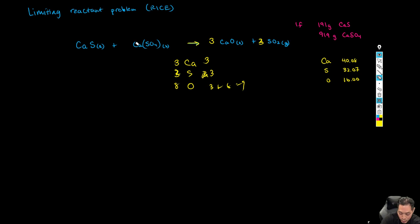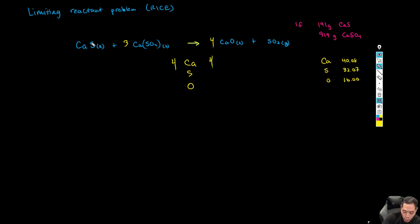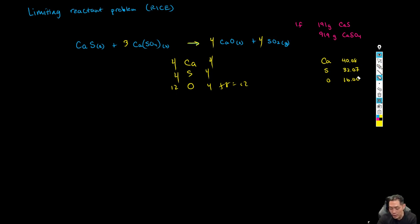Third attempt: instead of two we use three for that coefficient. Now we have one, two, three, four calciums — and four on the product side. We have four sulfurs, so we put four on the right. Now we have three times four, which is twelve oxygens: four times one is four, plus four times two is eight, totaling twelve. The equation is now balanced.